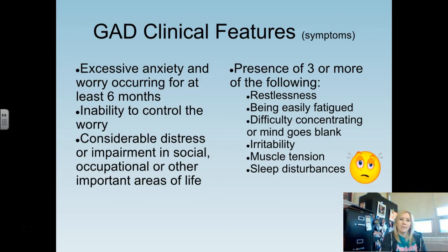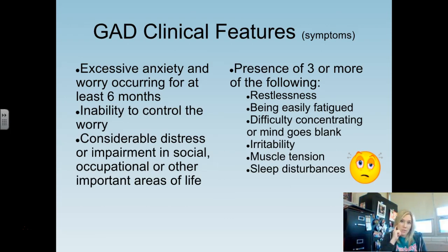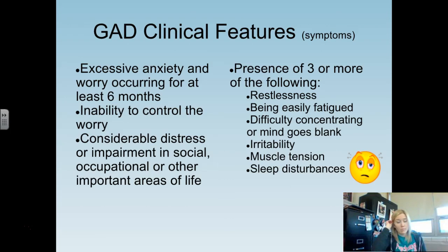To be diagnosed with GAD, you must have an overwhelming sense of worry and distress for at least six months, be unable to control those worrisome thoughts, and have impairment in social, occupational, or other daily functioning. You also need three or more of the following symptoms: restlessness, easily tired, difficulty concentrating, mind going blank, irritability, muscle tension, and sleep disturbances.